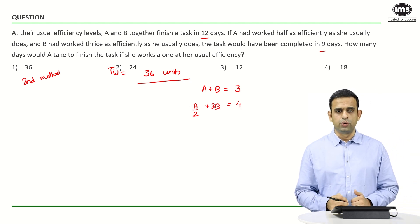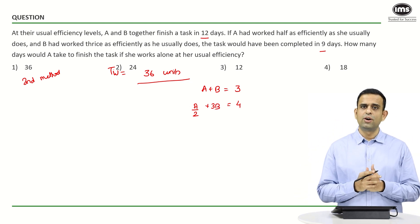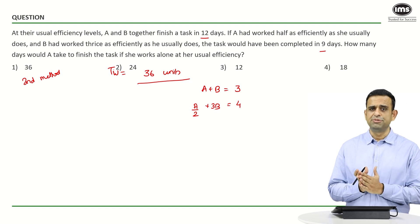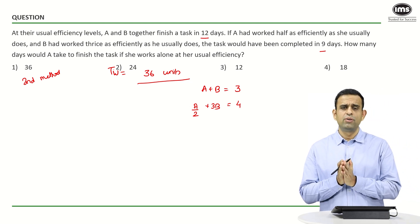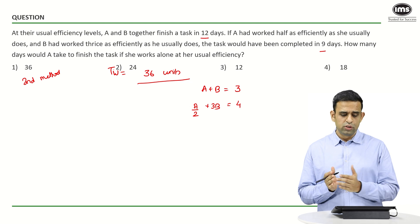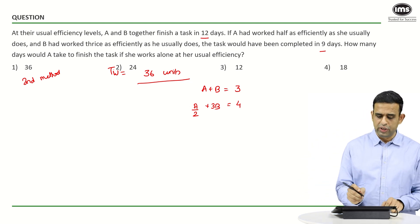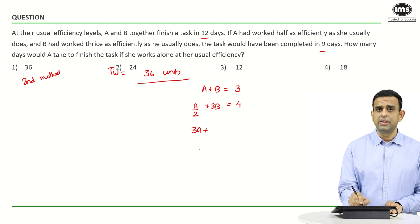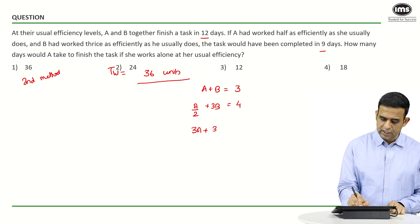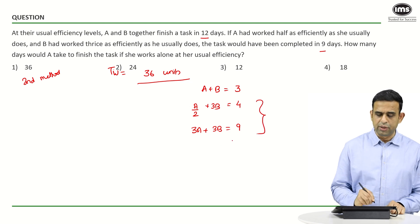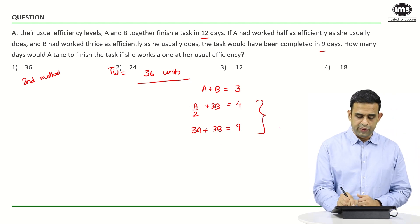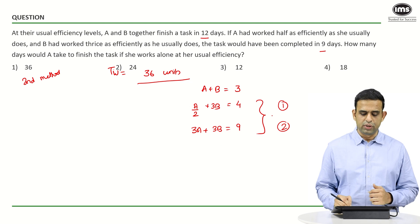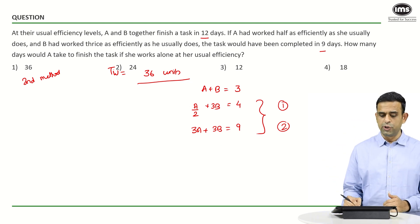We can find the per-day work of A and B respectively. I need to find the time taken by A alone, so let's eliminate B. Multiply the first equation by 3: 3A + 3B = 9. Subtracting equation 2 minus equation 1, we get 3A - A/2 = 5A/2 = 5.